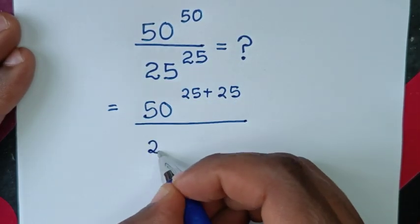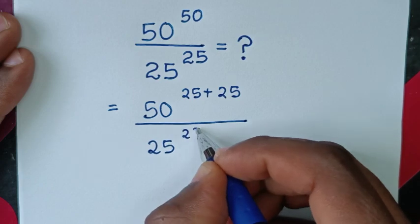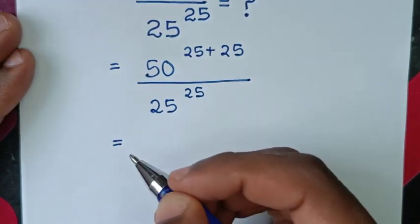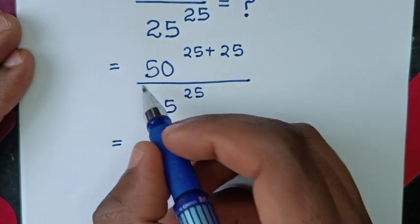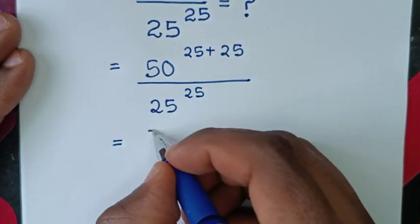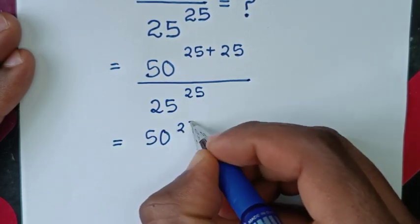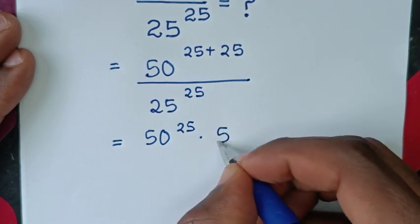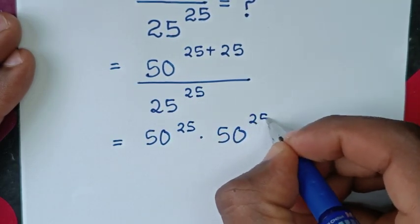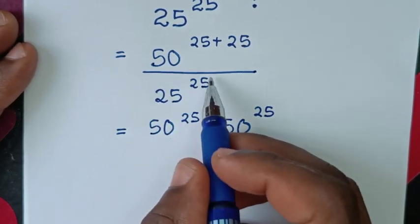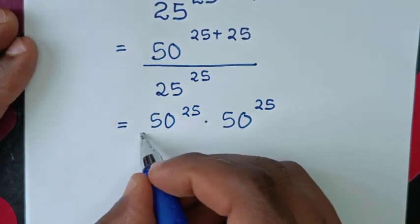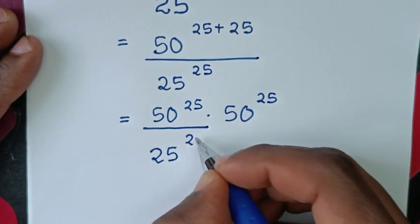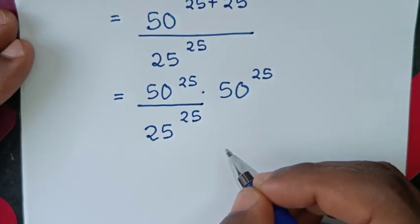From here, 50 power of 25 plus 25 is the same as 50 power of 25 times 50 power of 25, then divided by 25 power of 25.